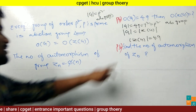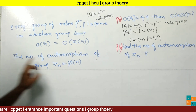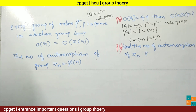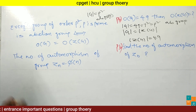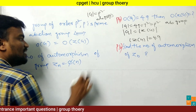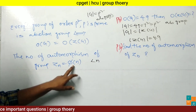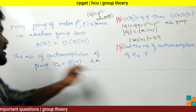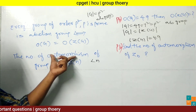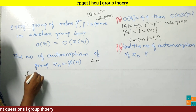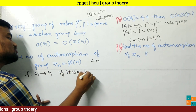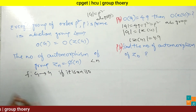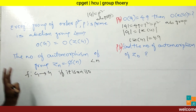The fourth result: the number of automorphisms of the cyclic group Z_n equals φ(n), the Euler totient function. φ(n) means the number of positive integers less than n and relatively prime to n. By definition, if f is a mapping from G to G and it is an isomorphism (domain and codomain both the same), then f is called an automorphism.